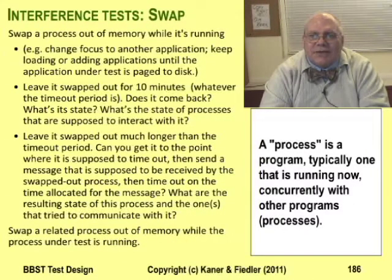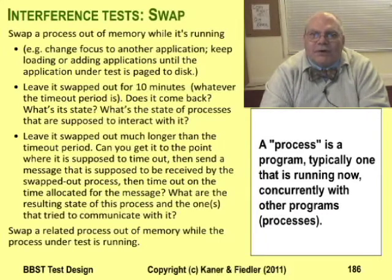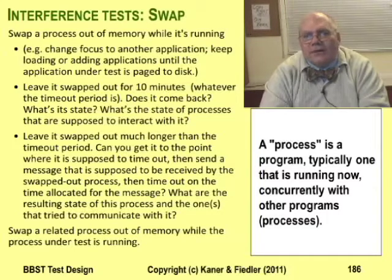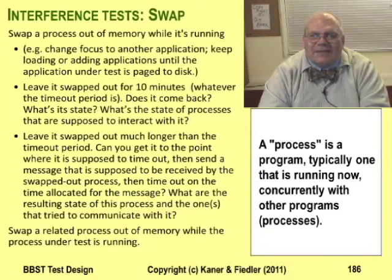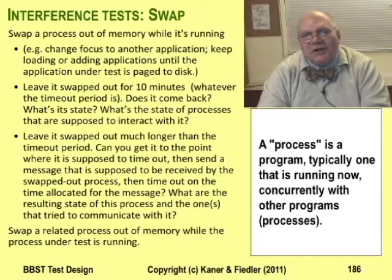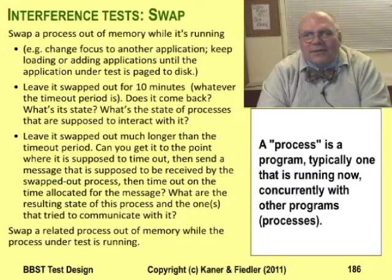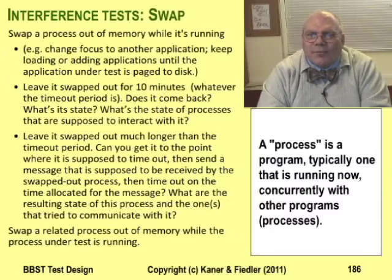Another example of interference testing has to do with swapping the running program out of memory. It's easy enough to do in a system that allows you to have bunches of programs running at the same time. Change your focus from the program that's running to the other programs until finally the system pages the program under test to disk. Now that it's inactive, try some mischief. Make a change to the system parameters or move one of the program's data files. Then refocus on the program under test and bring it back into memory. Will it recognize your changes and cope with them appropriately?